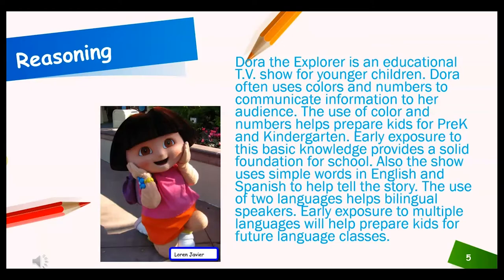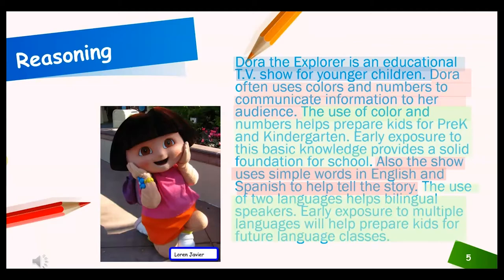Now it's time to put some reasoning to my evidence. Dora the Explorer is an educational TV show for younger children — that's my claim. Dora often uses colors and numbers to communicate information to her audience — that's evidence. The use of color and numbers helps prepare kids for pre-K and kindergarten. Early exposure to this basic knowledge provides a solid foundation for school — that's reasoning. Also, the show uses simple words in English and Spanish to help tell the story — evidence. The use of two languages helps bilingual speakers. Early exposure to multiple languages will help prepare kids for future language classes — that's my reasoning. There you go: claim, evidence, reasoning, all put together.